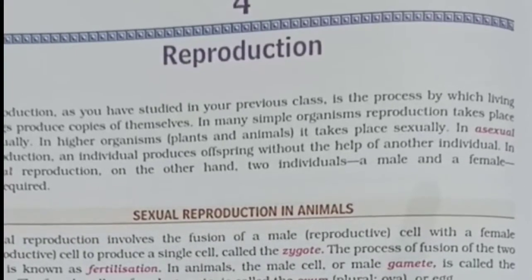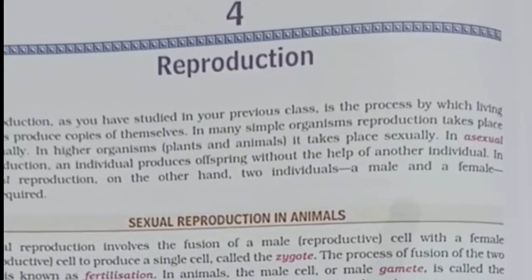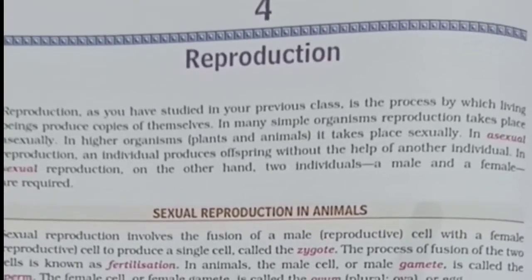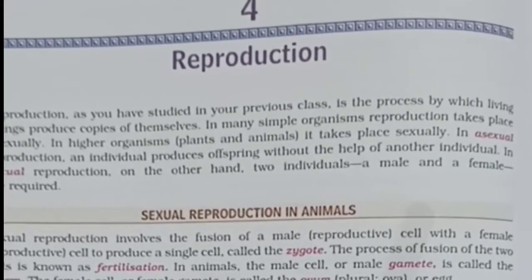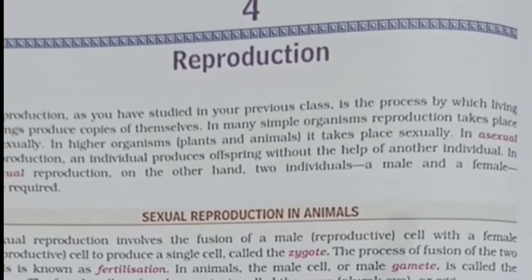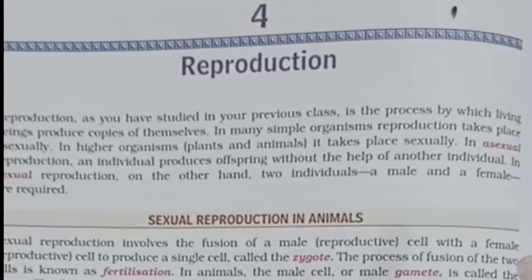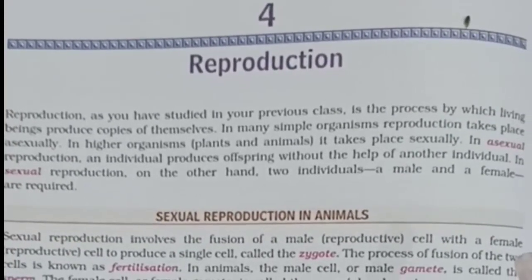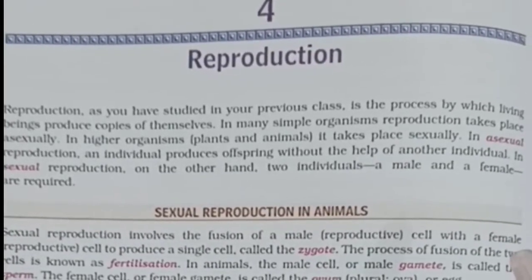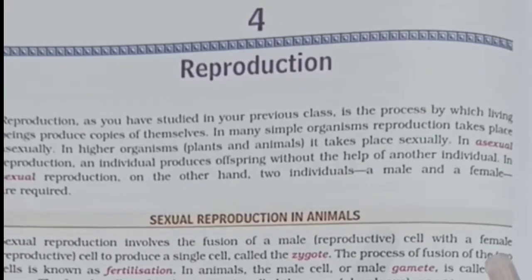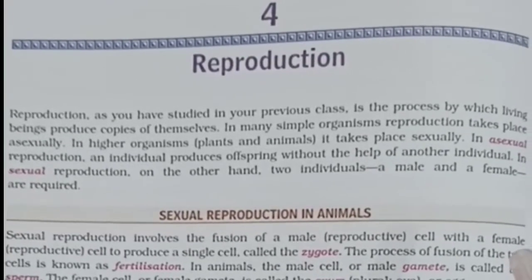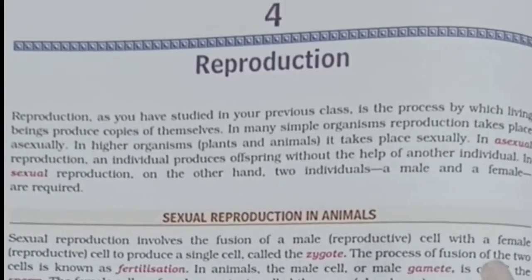In simple living organisms, reproduction takes place with the help of only one parent — that means either the male or the female. This type of reproduction is called asexual reproduction. The mode of reproduction in which only one organism is required, either the male or the female, is known as asexual reproduction. There is no requirement of another partner in asexual reproduction.